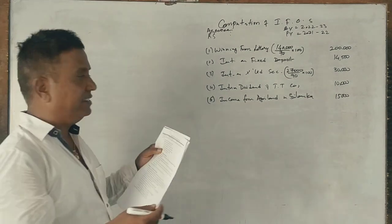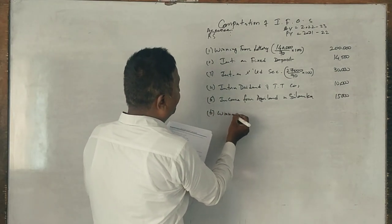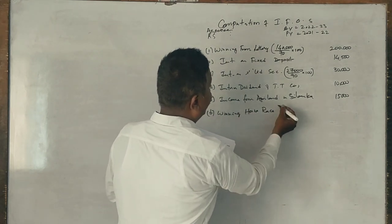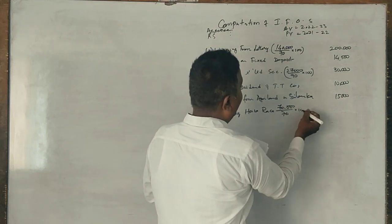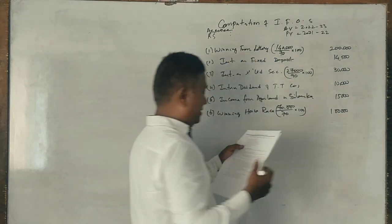Winning from horse race, net 70,000. What is for 100? 1,00,000. Next two,